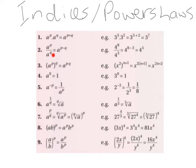Law number 2. If we are dividing powers with the same base, the rule is we subtract the powers. So A to the power of P divided by A to the power of Q gives us A to the power of P minus Q. An example: 4 to the power of 8 divided by 4 to the power of 3 gives us 4 to the power of 8 minus 3, which gives us 4 to the power of 5.